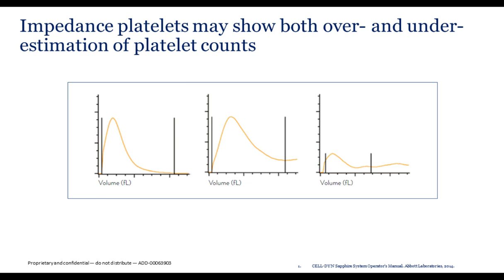The resulting impedance histogram shows three scenarios. A normal platelet count appears on the far left. In the middle, an overlap region on the right-hand side of the histogram most likely indicates macrocytic thrombocytes. The histogram on the far right indicates a mixed population of red cell fragments or large platelets. The two abnormal histograms on the right indicate a problem with the platelet count, and the result will most likely be flagged and require confirmation by alternate technology.